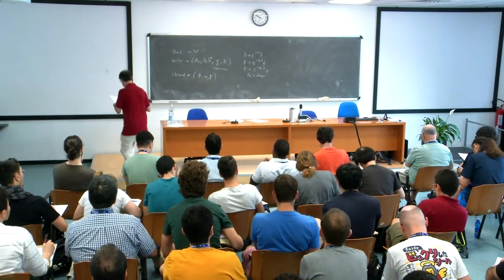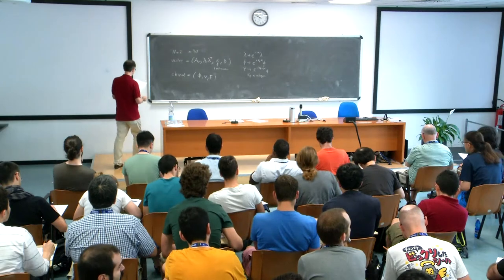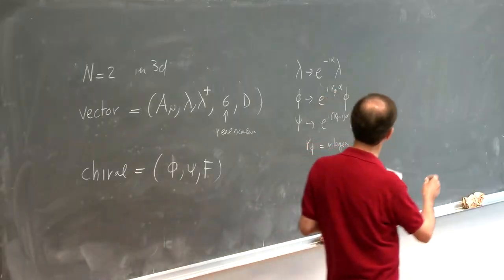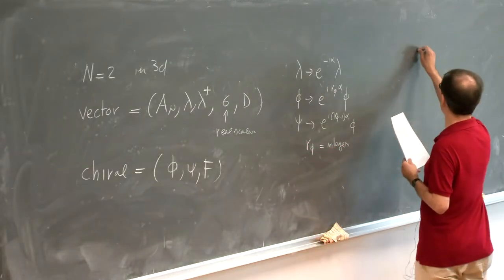I need to consider theories where you have an integer R-symmetry, so the charges of your fields are integers. Essentially, because you want to put the theory on the Riemann surface, the charge will be a charge on the Riemann surface, and you need to quantize it to have a consistent theory — a well-defined line bundle associated to the R-symmetry charge. The background I want to turn on: let me do it first for S^2 × S^1.